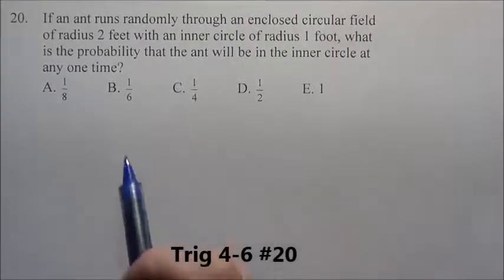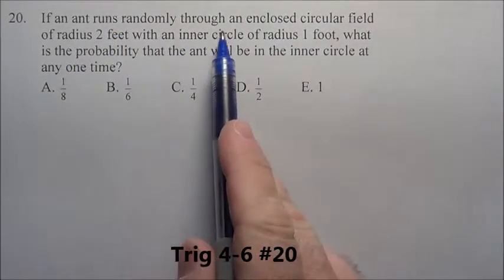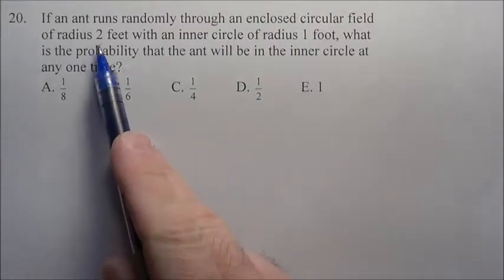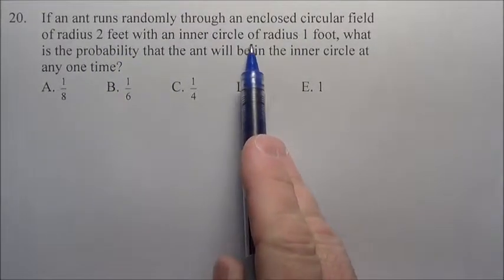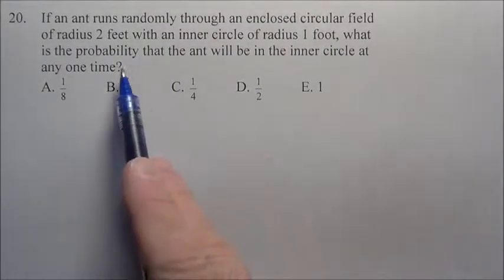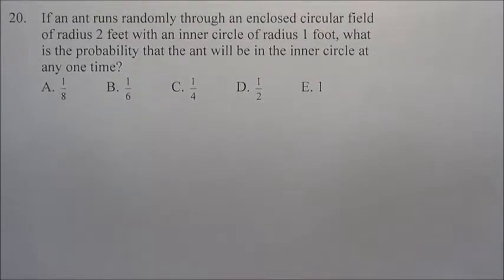Question 20. This is a great SAT question. If an ant runs randomly through an enclosed circular field of radius 2 feet with an inner circle of radius 1 foot, what is the probability that the ant will be in the inner circle at any one time?